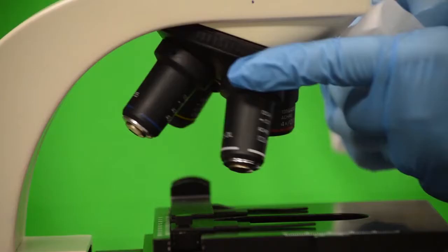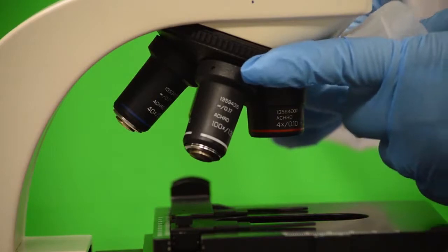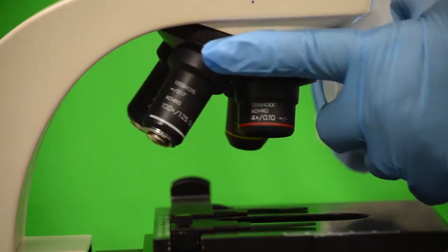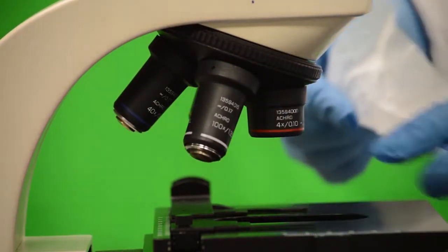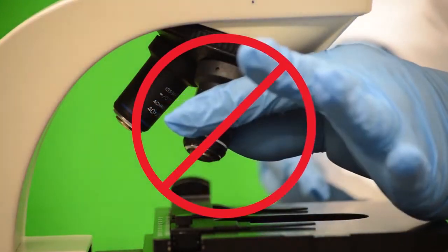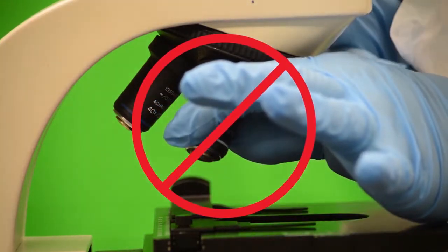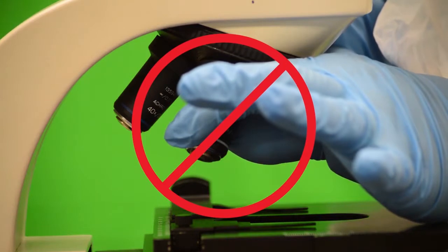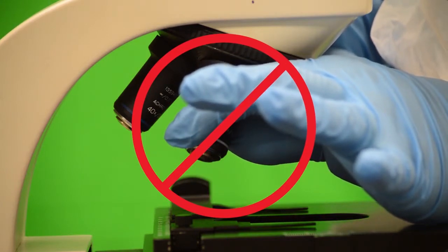The objective lenses are a set of small tubes located just above the stage. They are mounted on a rotating platform that can move right or left. When they are in the right position, they snap into place.